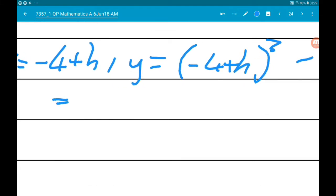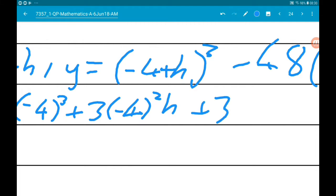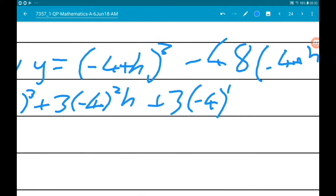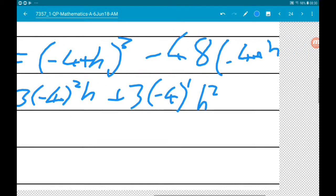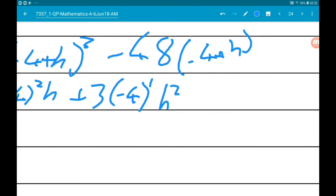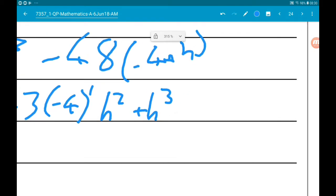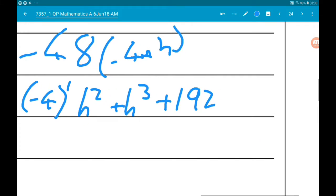Expanding minus 4 add h cubed, we're going to get 1 lot of minus 4 cubed, add 3 lots of minus 4 squared h, add 3 lots of minus 4 to the power of 1 h squared, add 1 lot of h cubed. Minus 48 times minus 4 is 192, and then we're going to get minus 48h.